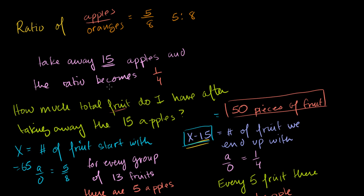I just did a video on this where I said the ratio of apples to oranges starts off at 5 to 8. We take away 15 apples and the ratio becomes 1 to 4. The question we have to answer is how much total fruit do we have after taking away the 15 apples? We figured out that it's 50 pieces of fruit, but let's see if we can do it a different way.